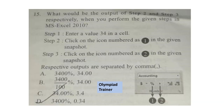Question 15: What would be the output of step 2 and step 3 respectively when you perform the given steps in MS Excel 2010? Step 1: Enter a value 34 in a cell. Step 2: Click on the icon numbered as 1 in the given snapshot. Step 3: Click on the icon numbered as 2 in the given snapshot. The correct answer is option A — 3400% and 34.00.